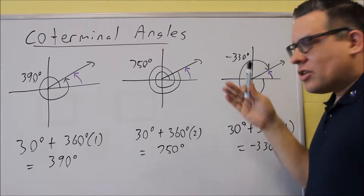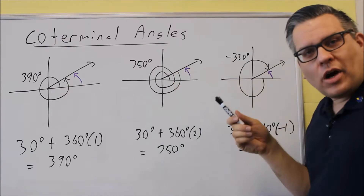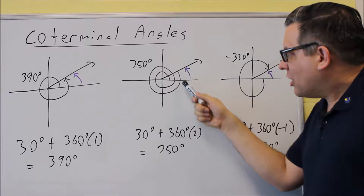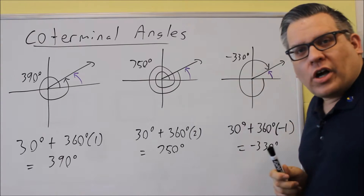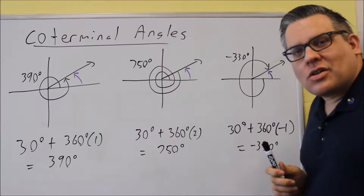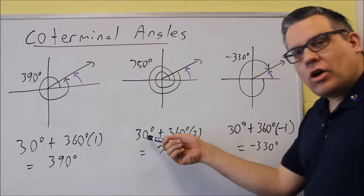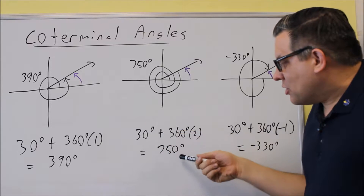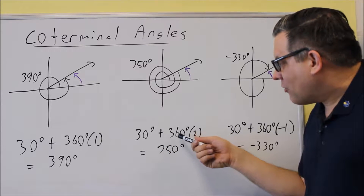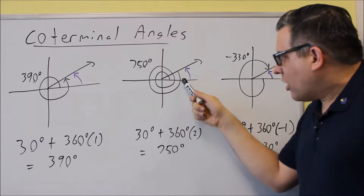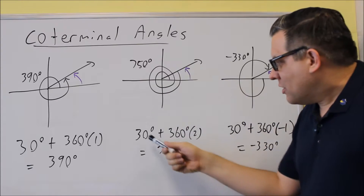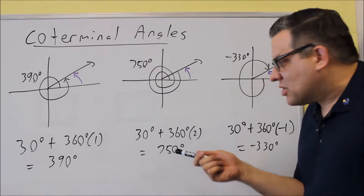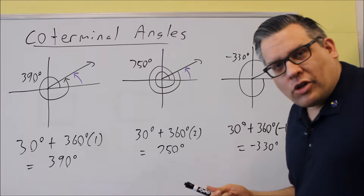There are other ways to arrive at 30 degrees. If we go around twice — once, twice — and then go up to where the angle is, the purple angle is still 30 degrees. Two revolutions plus 30 degrees gives us 750. So 750 and 30 degrees would also be coterminal angles.